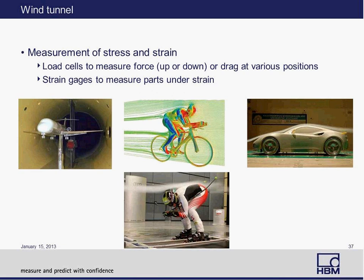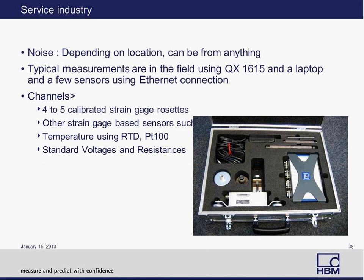One example is wind tunnel testing — whether for an airplane, a model airplane, a skier, a biker, or a car. Load cells measure force and the strain gauges measure strain at various positions. Note that the big fan generating the wind is also a source of noise, and the MX1615 with carrier frequency technology is ideal for overcoming any noise interference issues in that environment. In the field service industry, people like the MX1615 because you can put all 16 channels in one box, take various transducers including temperature, voltage, and strain gauge rosettes, hook up to a laptop, and acquire data using Catman or another software of your choice.